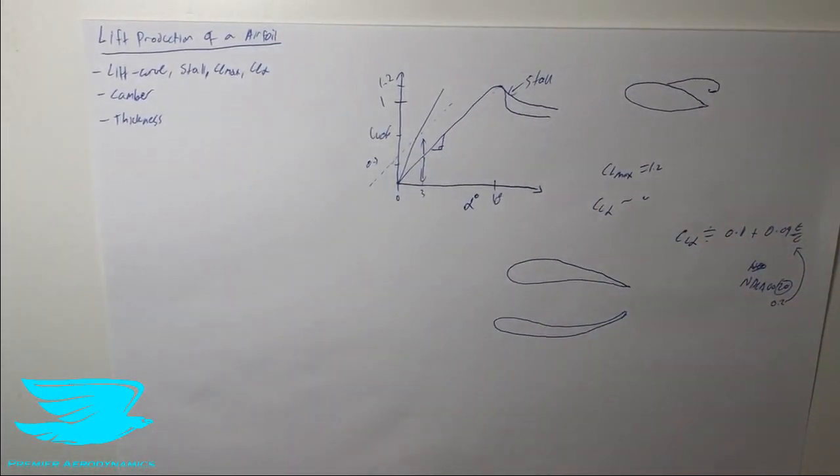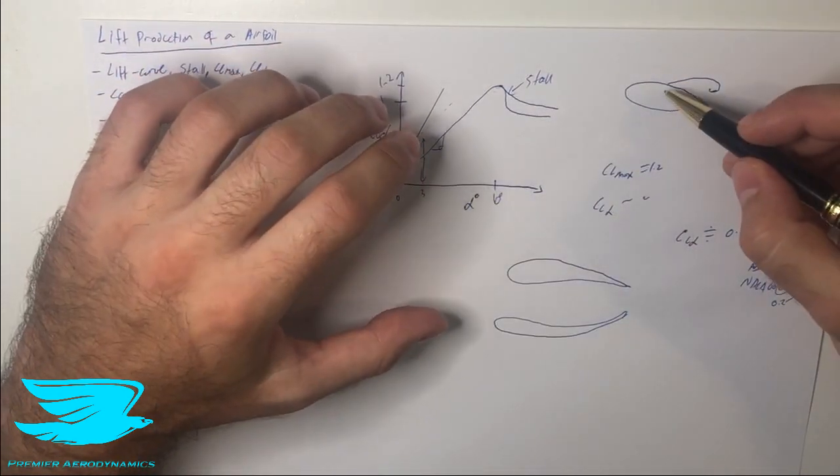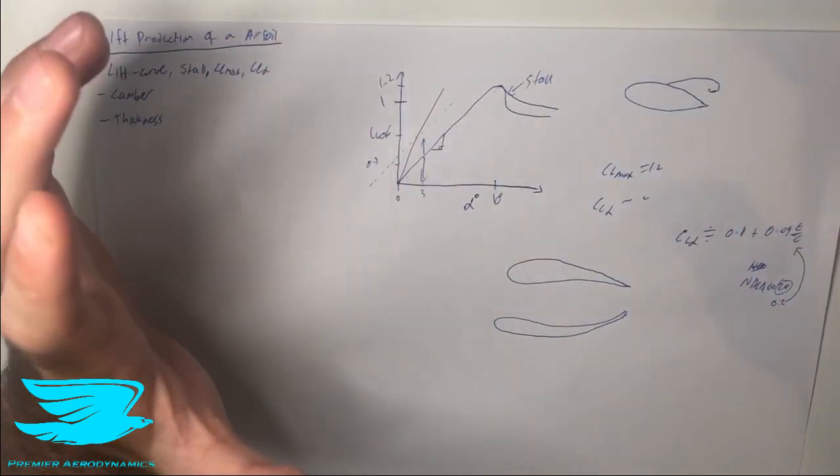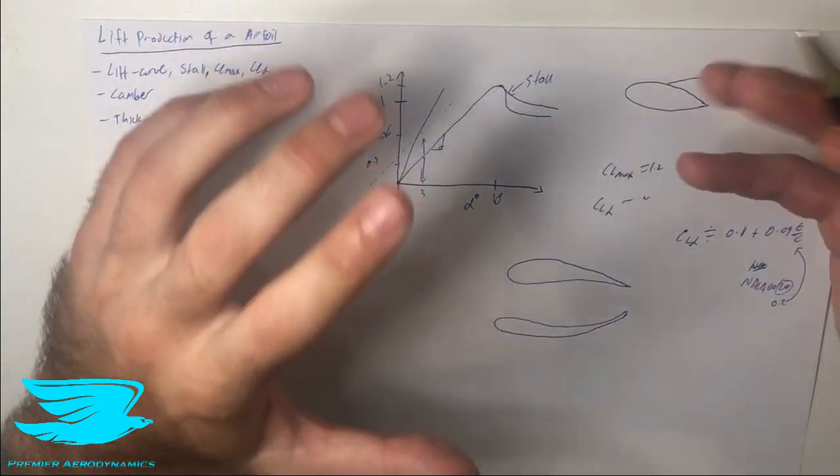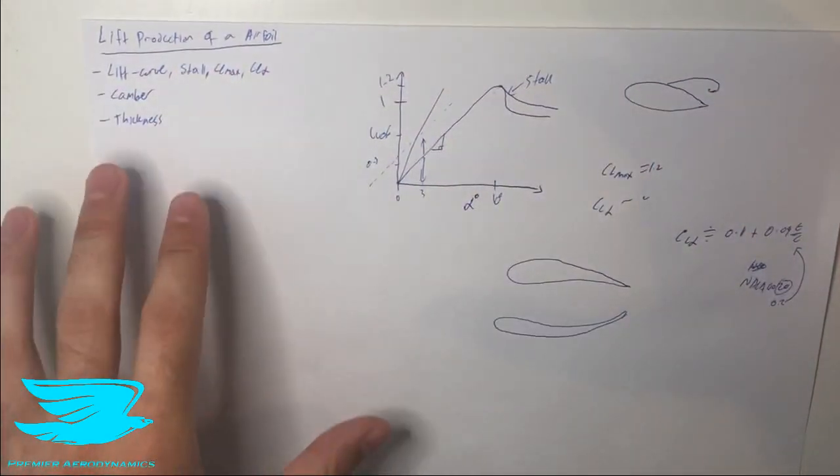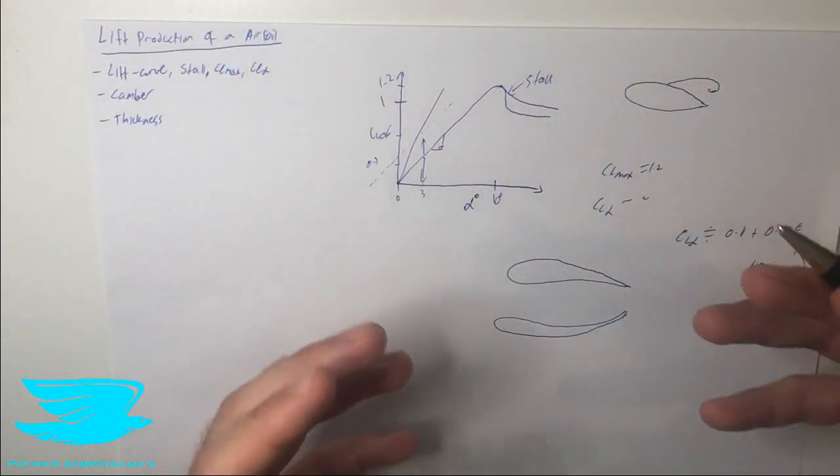So from this equation we can now tell quite easily a thicker airfoil, so an airfoil which has a greater thickness to chord ratio, will produce more lift at a given angle of attack than an airfoil which is thinner. So that's the effect of the thickness on the CL alpha and the lift being produced by this airfoil.